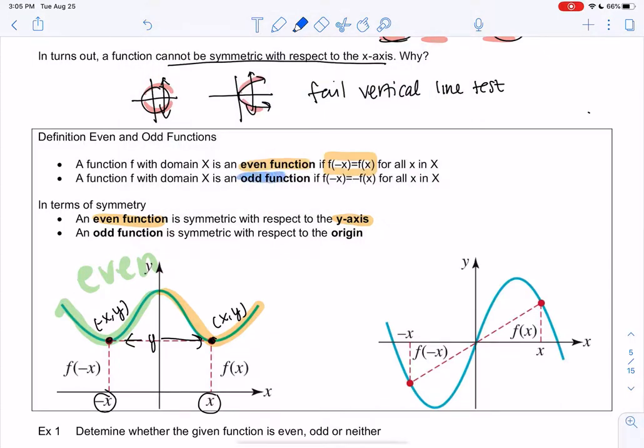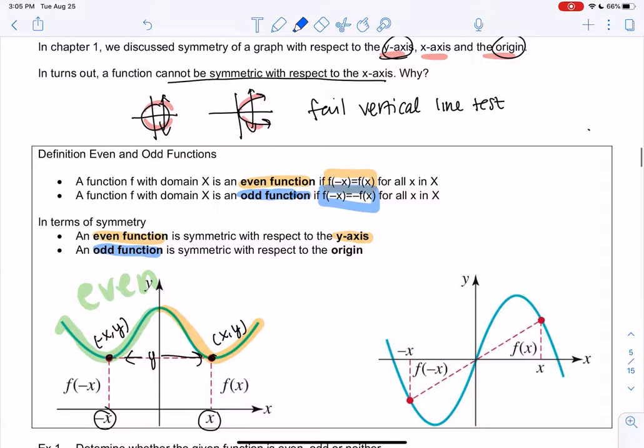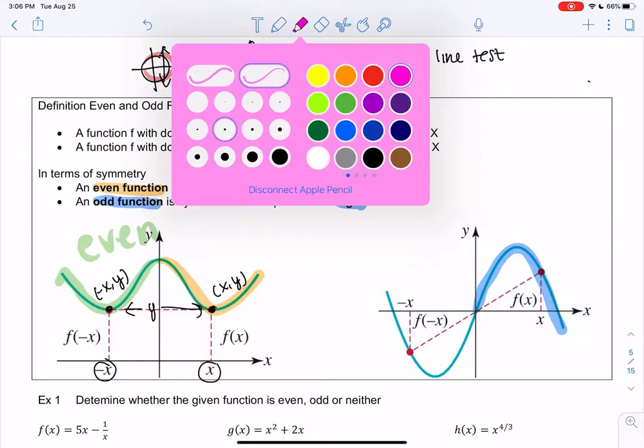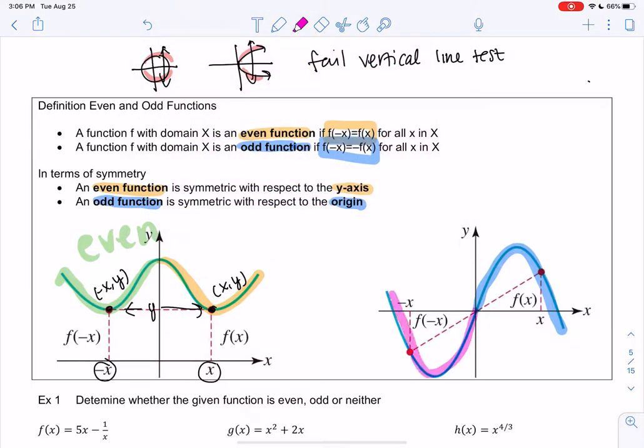For an odd function, it's basically the opposite. When we plug in negative x, we get the negative function, and we might remember that's symmetric about the origin. So in this graph, symmetric about the origin means we take that and then we can kind of flip it. It has that 180 degree relationship. But if I plug in x and I get y, if I plug in negative x, I get negative y. So there's that reflection right there.